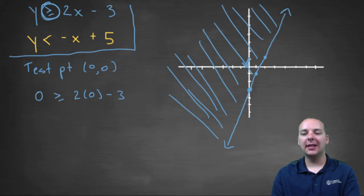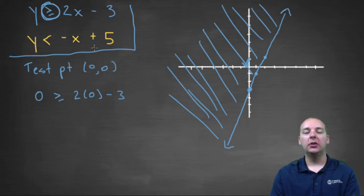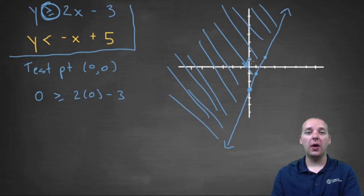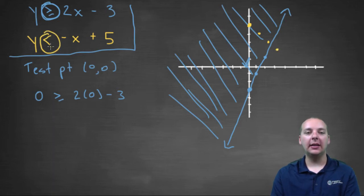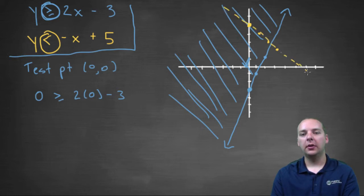Now let's do the same thing with the second inequality: y strictly less than negative x plus five. I'm going to graph y equals negative x plus five. It has a y-intercept of five and a slope of negative one, so you go down one over one repeatedly. This one is going to be a dotted line because it's a strict inequality.